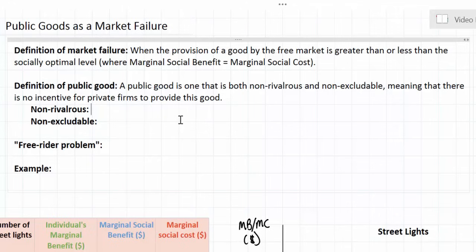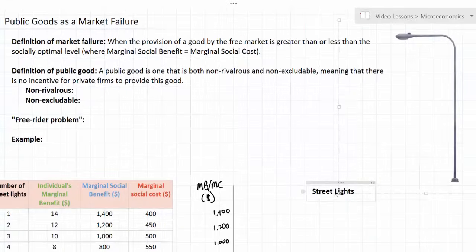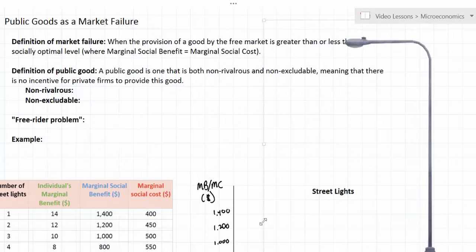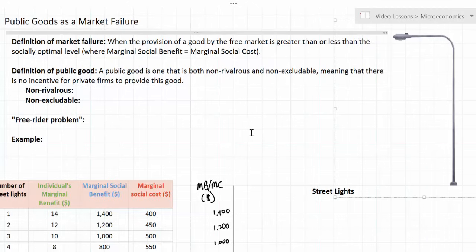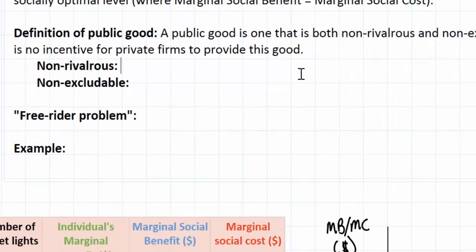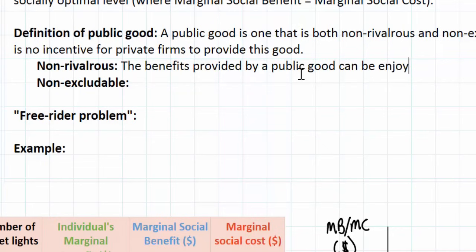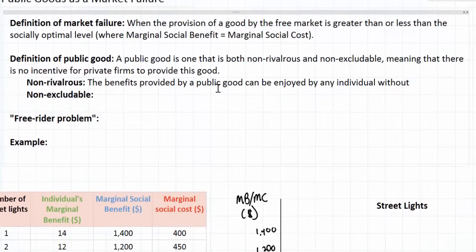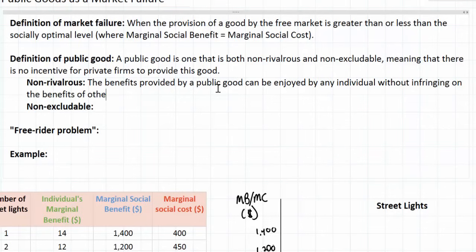The example I'm going to focus on throughout the rest of this lesson is the street lamp. Street lamps, or street lights like that which we see here on the right, are to be found everywhere in cities in the rich world. These goods provide benefits to individuals and to society as a whole. However, the benefits enjoyed by an individual from the existence of a street lamp are what we call non-rivalrous, meaning that the benefits provided by a public good can be enjoyed by any individual without infringing on the benefits of other individuals.